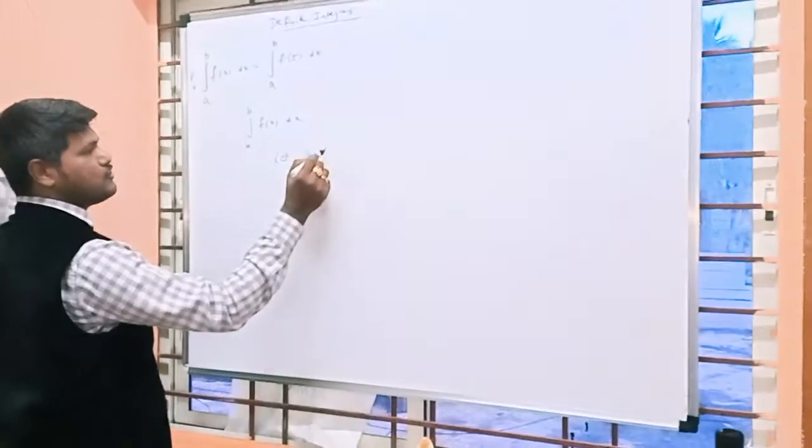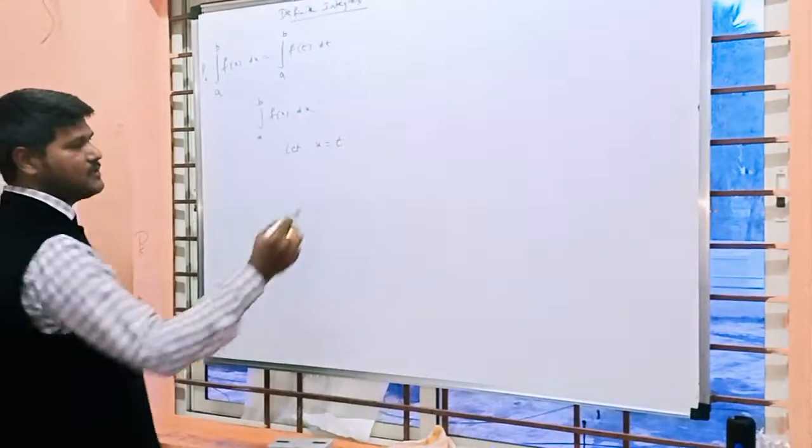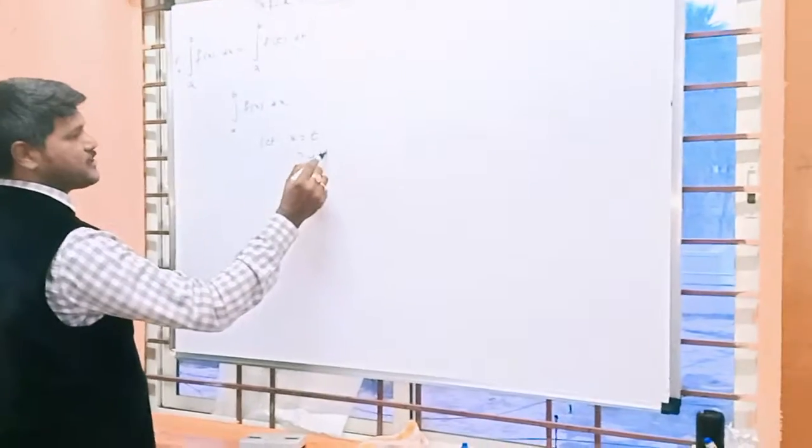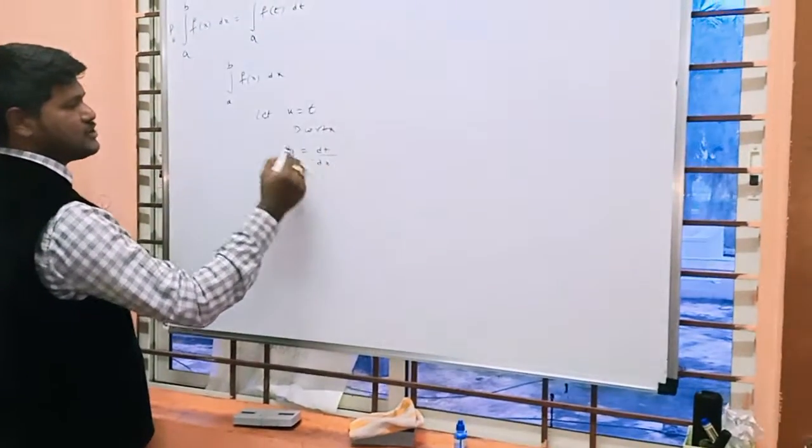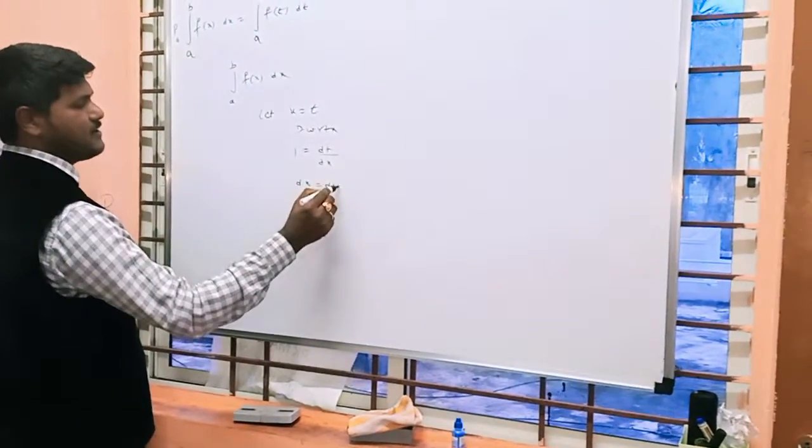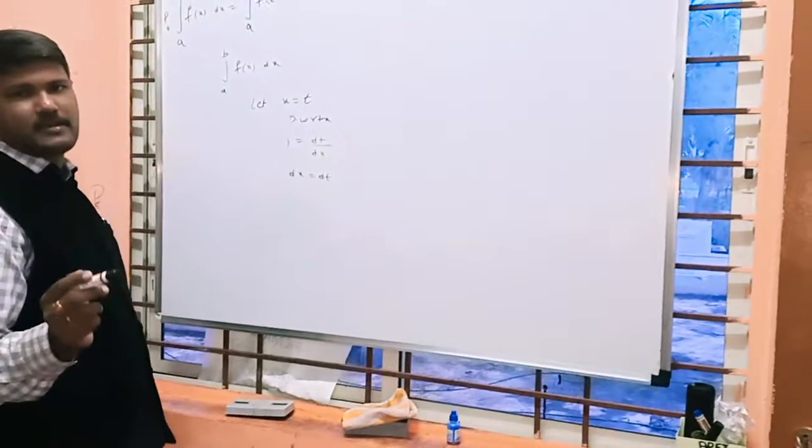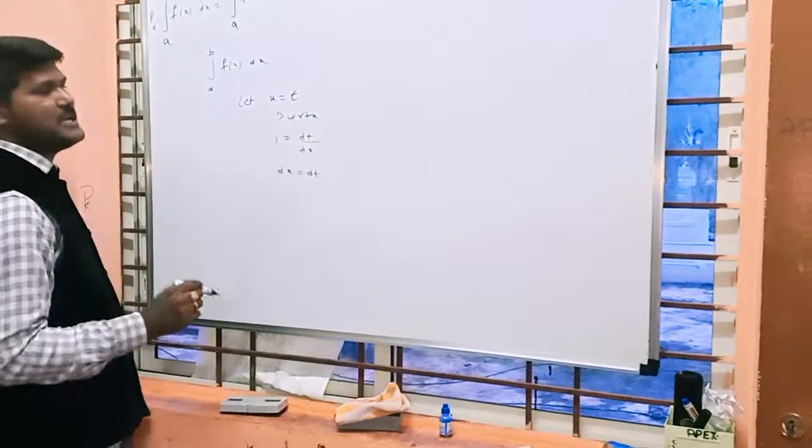Let x equal t. Differentiate with respect to x: 1 equals dt/dx. Cross multiply: dx equals dt. Whenever you are considering x equals t, you can change the limit also.